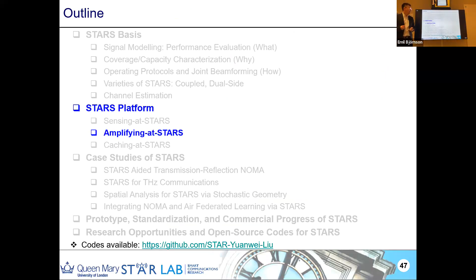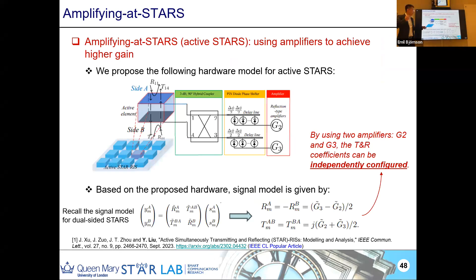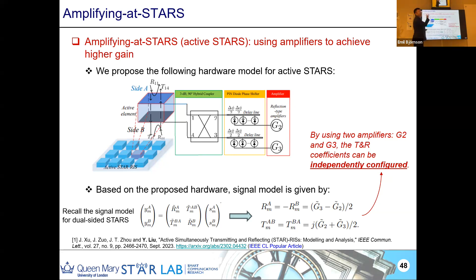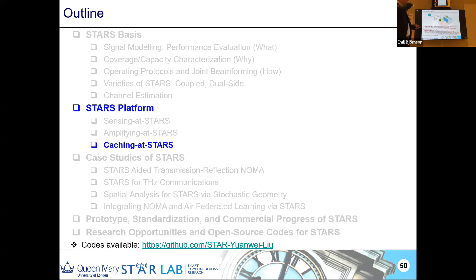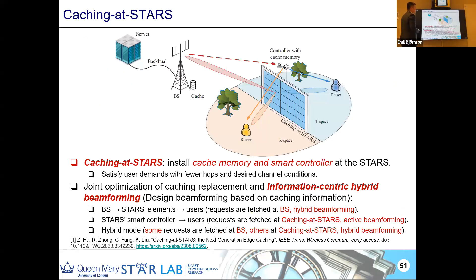For amplifying-STARS, we put active amplifiers on the STAR to achieve higher gain — similar to a relay. We need to redefine the hardware model by revisiting Maxwell's equations. We can achieve good diversity order gain and power scaling gain with this amplifying design.